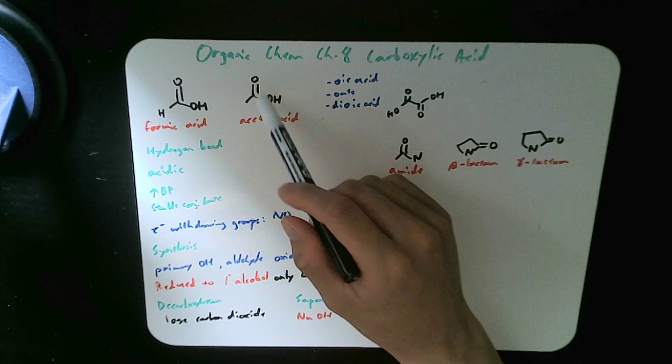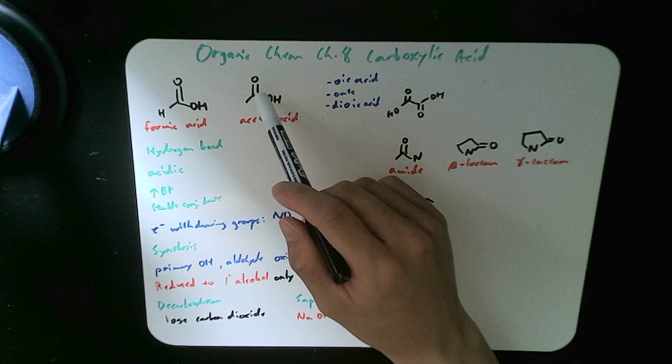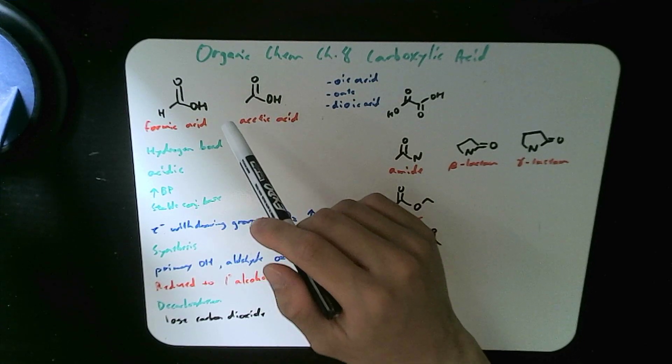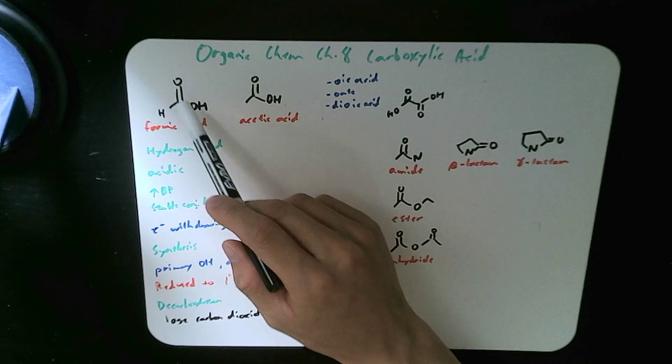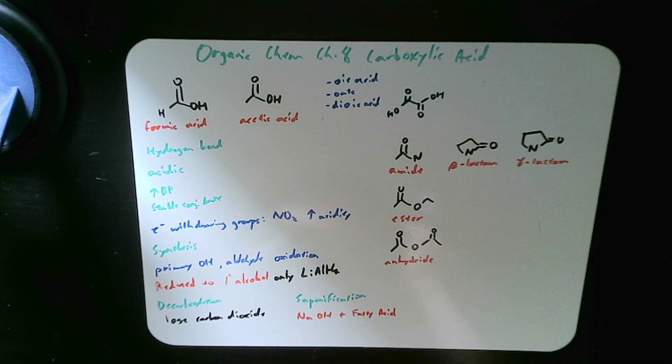And you can even form a resonance structure where the bond can jump from here to here as well. So that stabilizes the electron a lot more, making the relative acid very acidic.